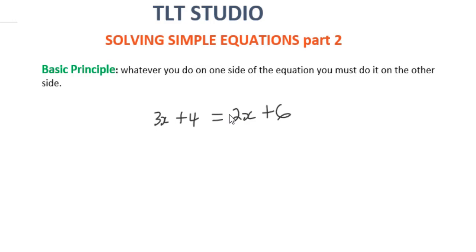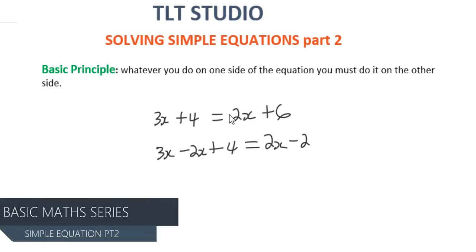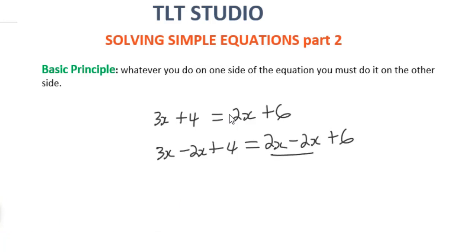So the first thing we are going to move is this 2x here. In order to move this 2x, we would have to minus by 2x. So on the left hand side, we are going to do the same thing as well. So this will be 3x minus 2x plus 4, which is this plus 4 here, equals 2x minus 2x plus 6. So that is zeroed out. So now we are left with x plus 4 equals 6.